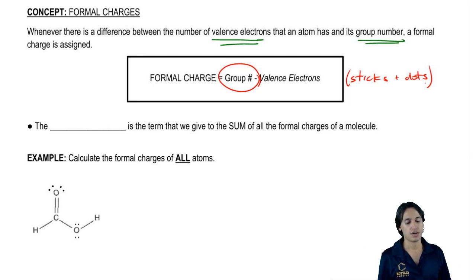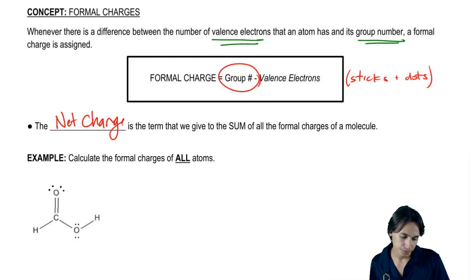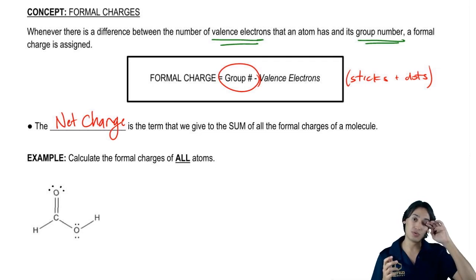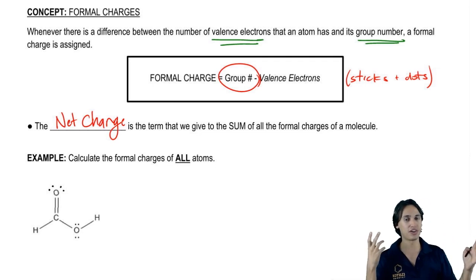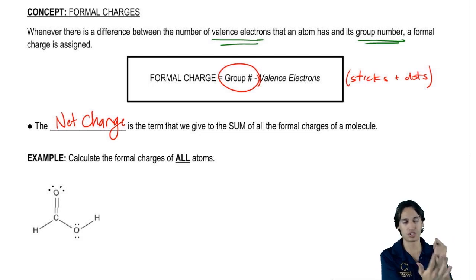That's called the formal charge. The net charge, let's write that down. The net charge is the term that we give for the sum of all the formal charges. Now this is an important point because I remember when I was in undergrad, I used to get a little bit confused over does the formal charge go on the whole thing or is it just one atom? No, the formal charge is one atom at a time. You're just looking at each atom and saying, does this have a formal charge? The net charge is the collection of all of those summed together.